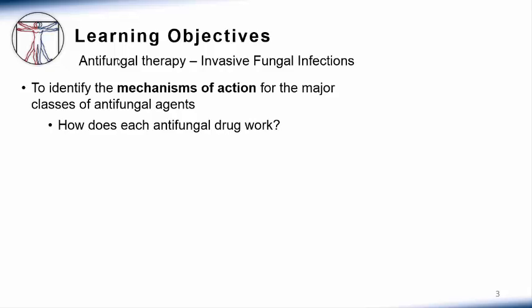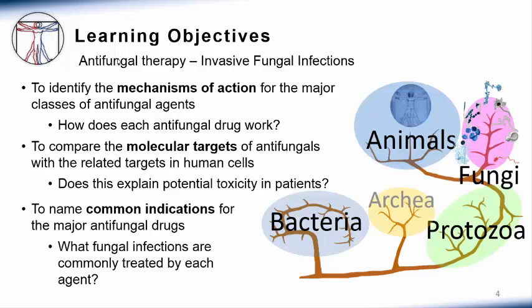The learning objectives for this talk are to first explore how the major antifungal drug classes work by defining their mechanism of action. There is an interesting issue in considering antifungal therapy since fungi and humans are both eukaryotes and therefore have very similar cell physiology. It is therefore quite difficult to identify cellular features that are sufficiently unique in fungi to serve as targets for antifungal therapy.